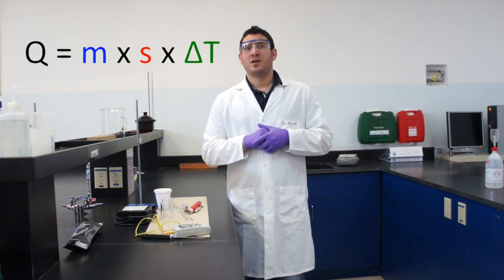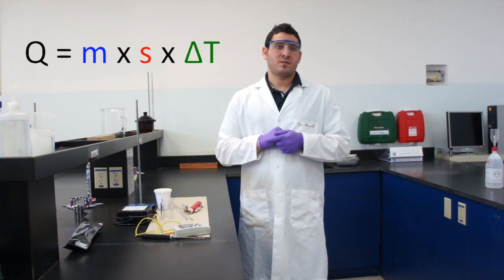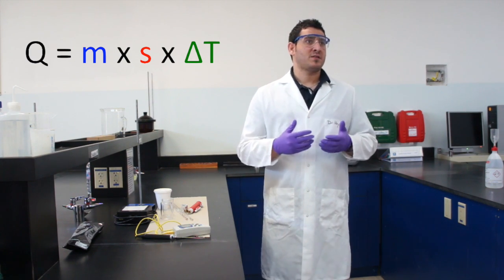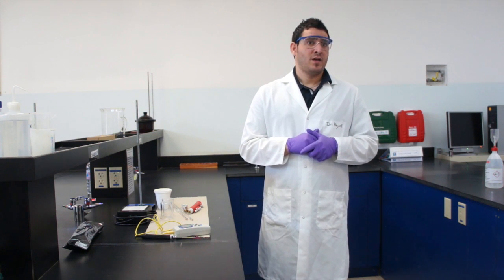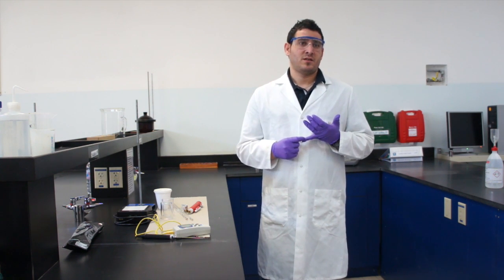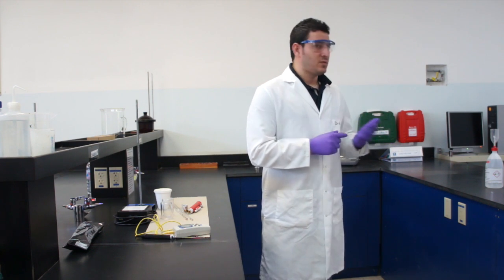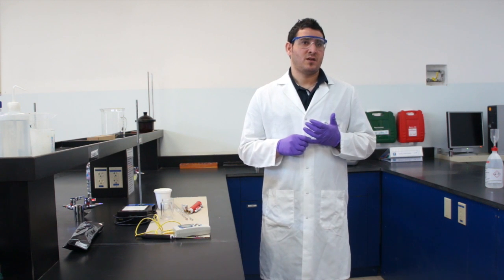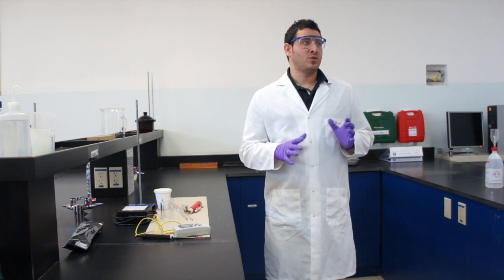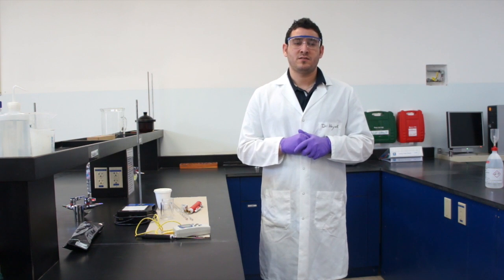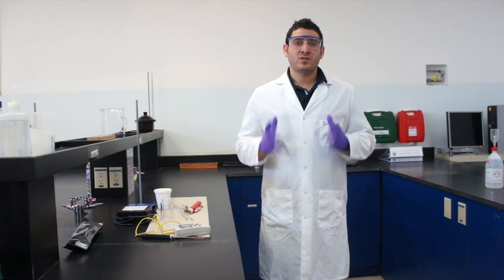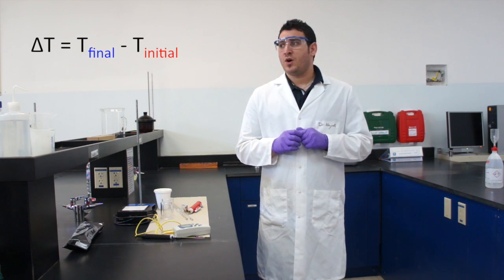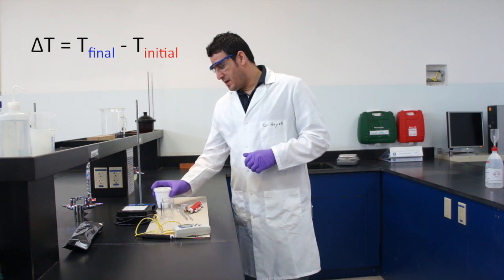We are going to measure this experimentally. As you know, heat equals mass times specific heat capacity of the solution, which in this case is water, times delta T. The mass I can easily determine if I have the volume and I know the density. I will take it around one so I can determine the mass. Specific heat capacity of water is constant, it's 4.18.